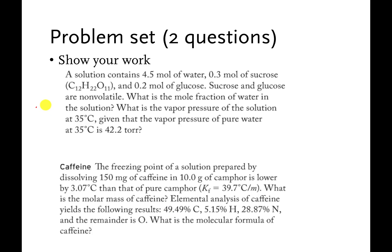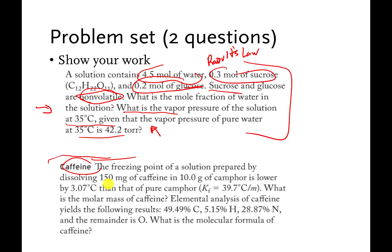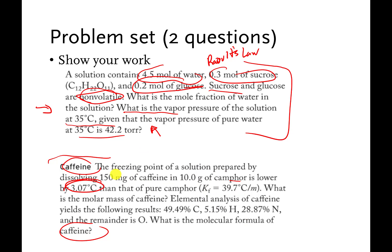This is the problem set. The first problem deals with Raoult's Law — you have a certain amount of water, a certain amount of table sugar, and a certain amount of another sugar. It says those sugars are not volatile, so they don't make a vapor. It wants to know what the vapor pressure of the solution is. The second problem is similar to the one we just did: they're taking caffeine, dissolving 150 milligrams of caffeine in 10 grams of camphor. They tell you the freezing point depression constant for camphor and the freezing point depression number, and they want to know the molecular formula for caffeine. Good luck with it — that's it for this deck of slides.